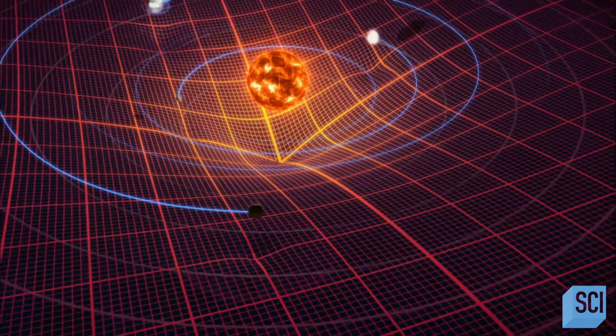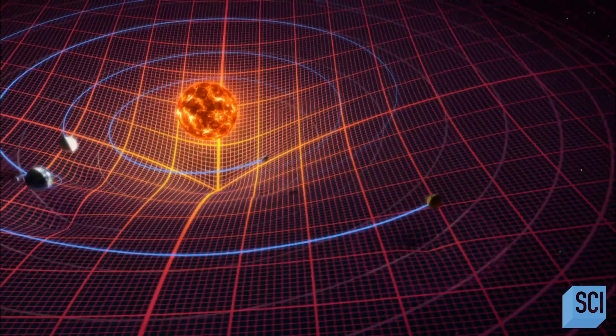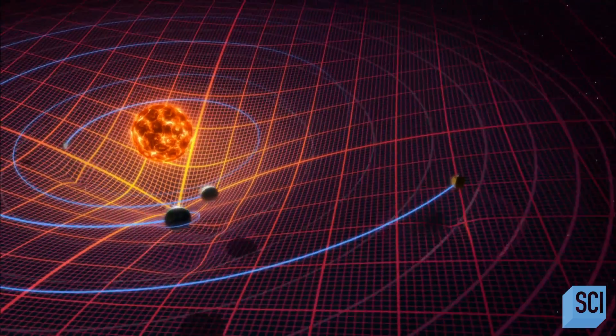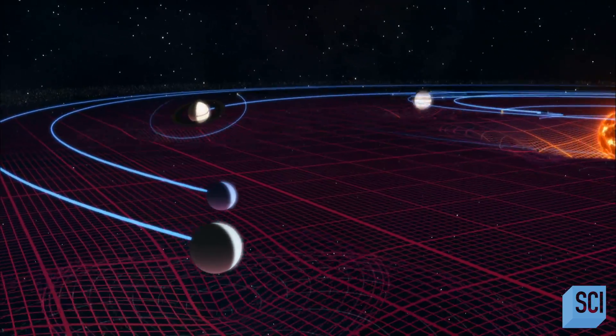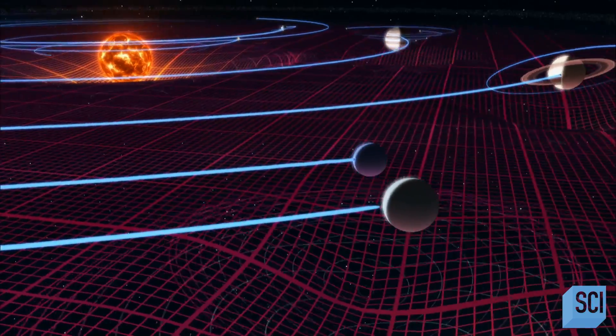The rules are simple. Matter, in fact any object, tells space-time how to curve. The curvature of space-time tells matter how to move. Because the shape of space-time tells matter how to move, what we call gravity, this means that gravity and the shape of space-time tells matter how to clump together and form larger and larger structures.